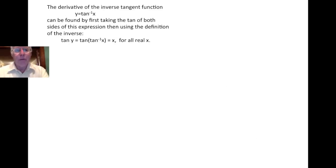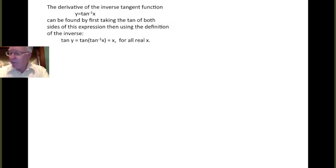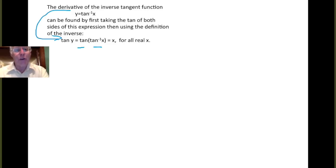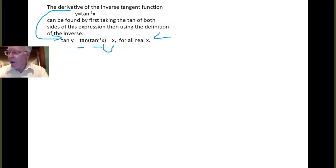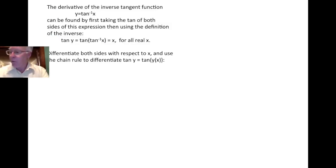We can find the derivative of the inverse tangent function by taking the tangent of both sides of the equation y equals inverse tangent of x, and then doing an implicit differentiation on each side. This is very much like what we did for the inverse cosine function. From y equals tangent inverse of x, we take the tangent of both sides, which gives us tangent y on the left, and tangent of tangent inverse of x on the right. Composing a function with its inverse undoes them, and we get back the original input x. This is true for all real numbers x, since the inverse tangent function has domain minus infinity to infinity.